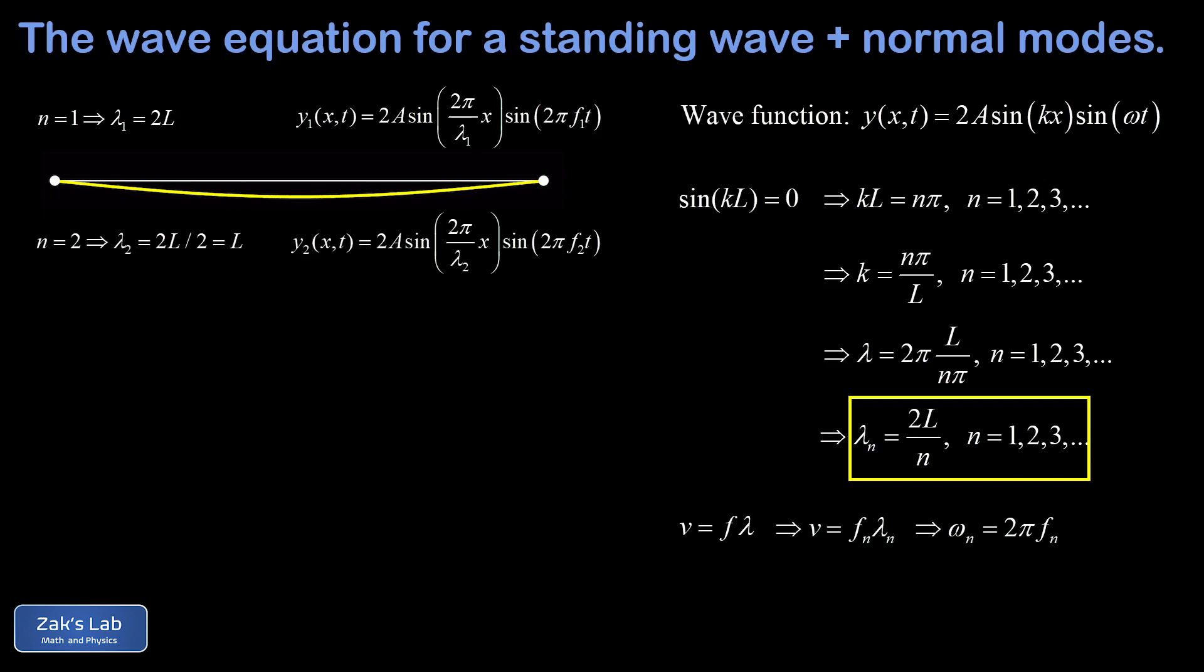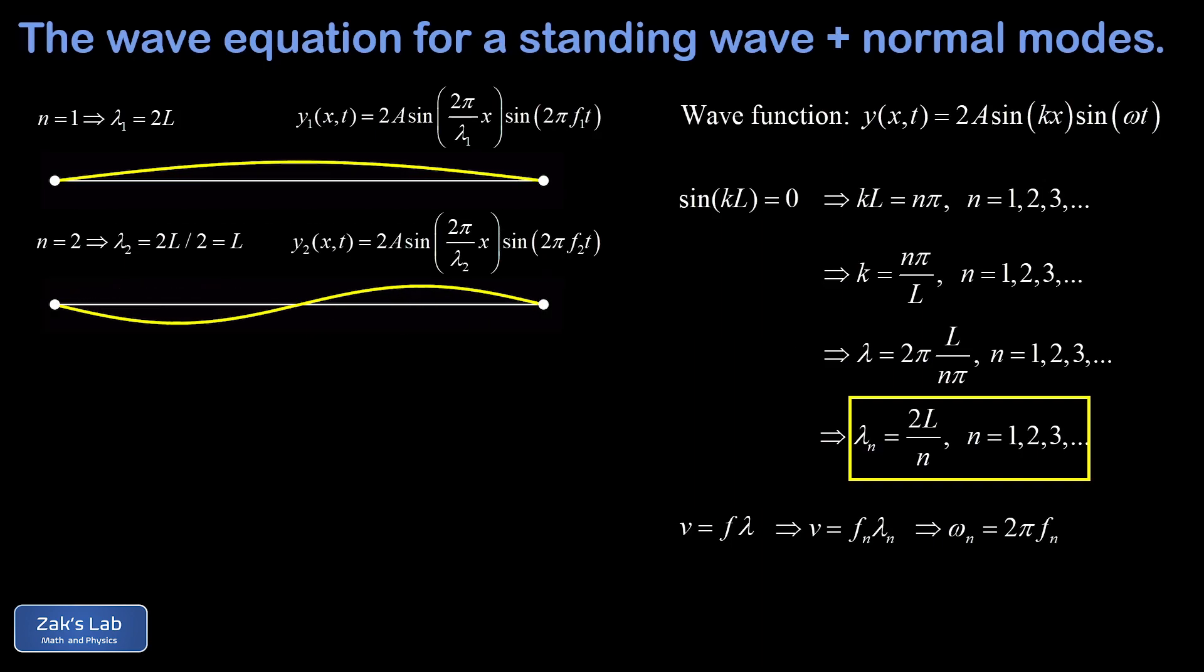Next, we sub in n = 2, and that gives us λ2 = 2L over 2, or simply the length of the string. So the wavelength is equal to the length of the string. And again, our explicit wave function for this standing wave is given by just subbing in n = 2 for the wavelength and the frequency. And this is called the second harmonic for the string. And here's what that one looks like. Notice that that second harmonic is vibrating much faster. We have a shorter wavelength. In fact, it's half as big. So we have a larger frequency, and that's actually twice as much as the first harmonic.